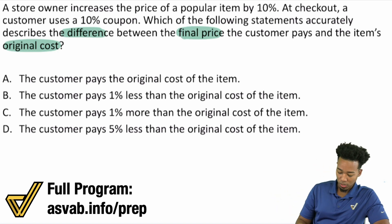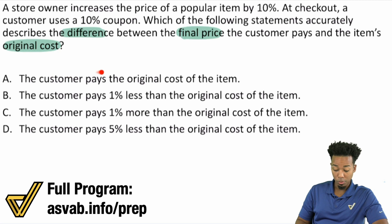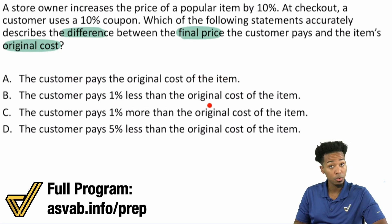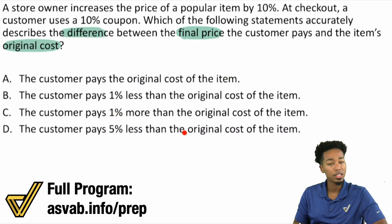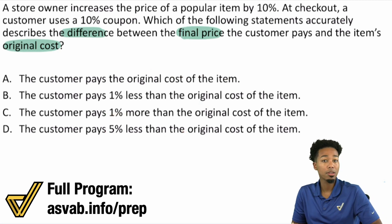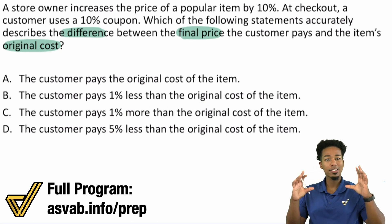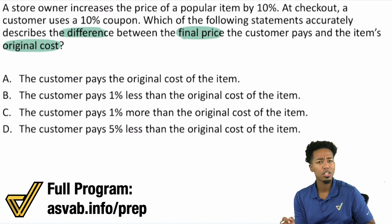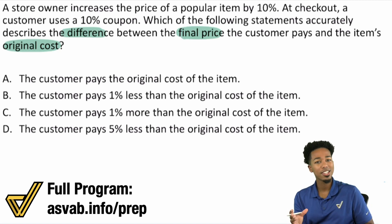When you look at the answer choices, you see that the customer pays the original cost of the item, or the customer pays 1% less than the original, 1% more, or 5% less. So it looks like we're talking about a percent change problem — same price, 1% more or less, 5% more or less. Because this is a percent change problem, we're going to want to be careful here.